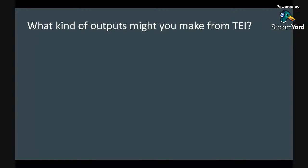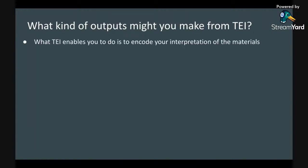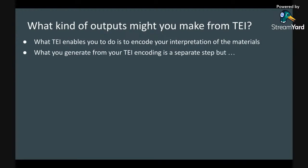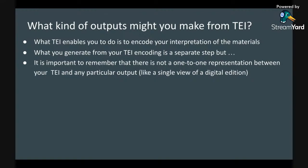What kinds of outputs might you make from a TEI project? TEI enables you to encode your interpretation of the materials within the source file itself, which is why it's such a great archival format. What you generate from your TEI encoding is a separate step. There's no one-to-one correspondence between a TEI project and any particular output. Anytime you transform TEI, you're in some ways losing some aspects of what is encoded in that source data, but because it's in the source data, it can always be retrieved and made useful for a variety of views.